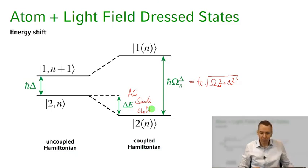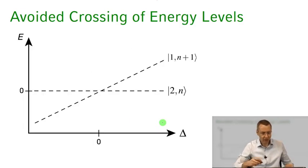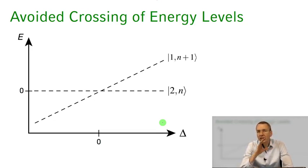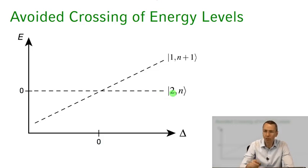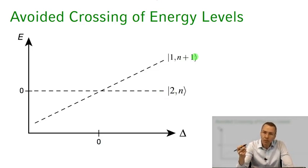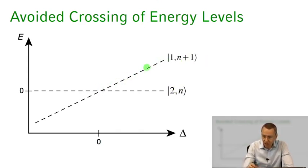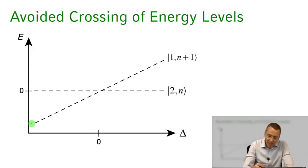Now let's take a look at how this energy separation changes as a function of detuning. I'm plotting the uncoupled basis states, imagining no coupling between the atomic system and the light field. Taking the energy of the |2, n⟩ state as our reference energy zero, and changing the detuning — the |1, n+1⟩ state, having one photon more while the atom is in the ground state, increases in energy with slope delta for positive detuning and decreases for negative detuning. This leads to a crossing of the energy levels.